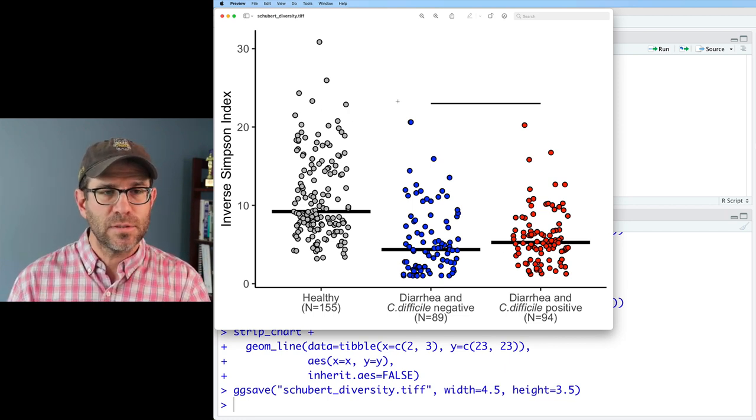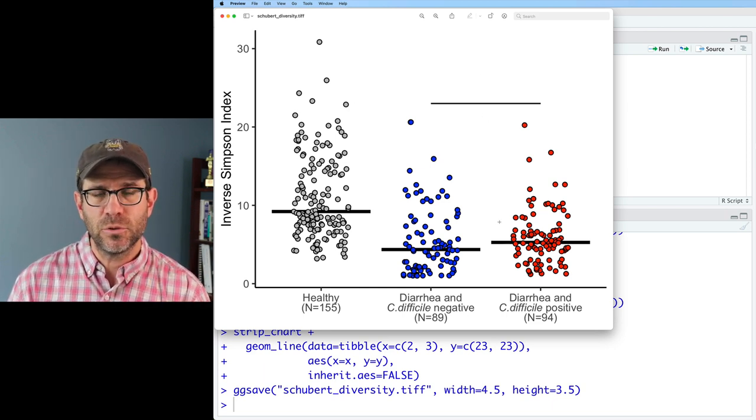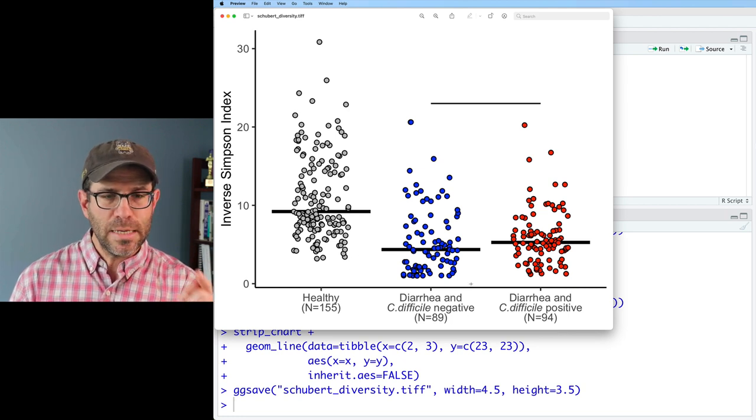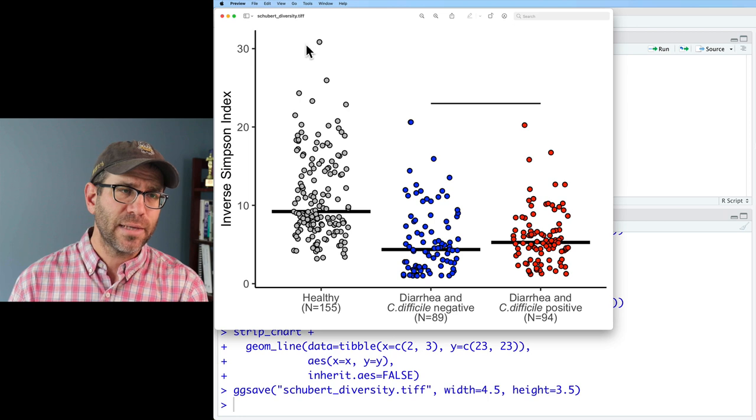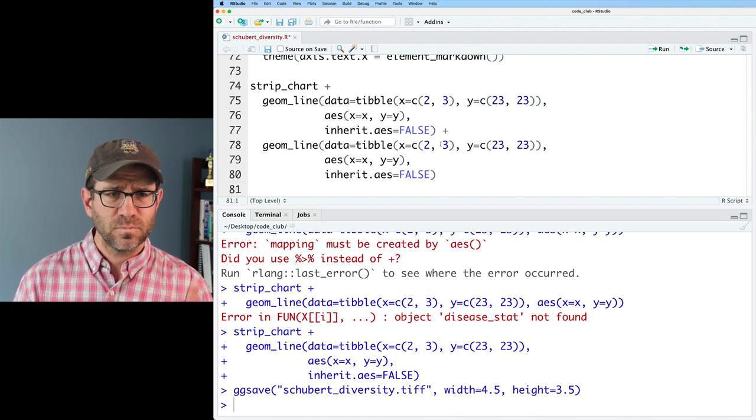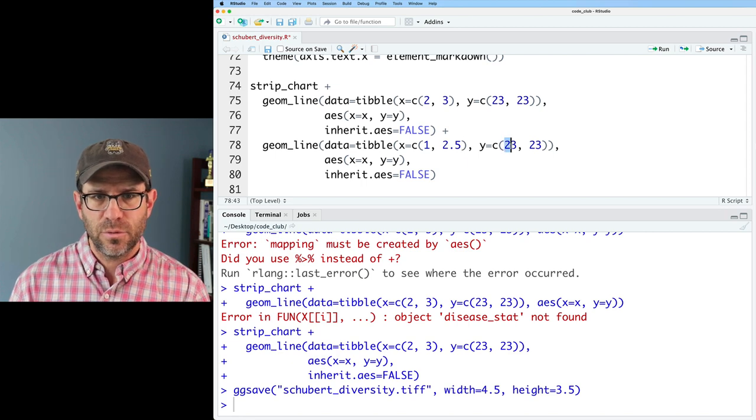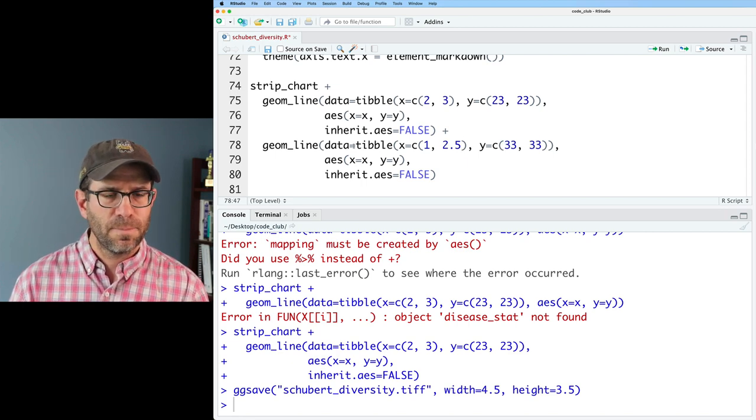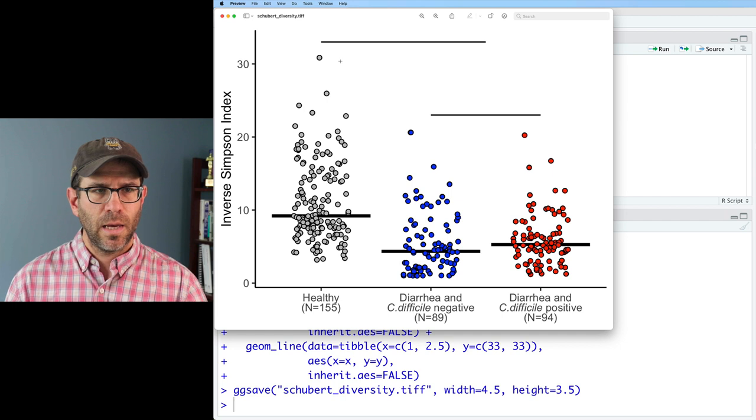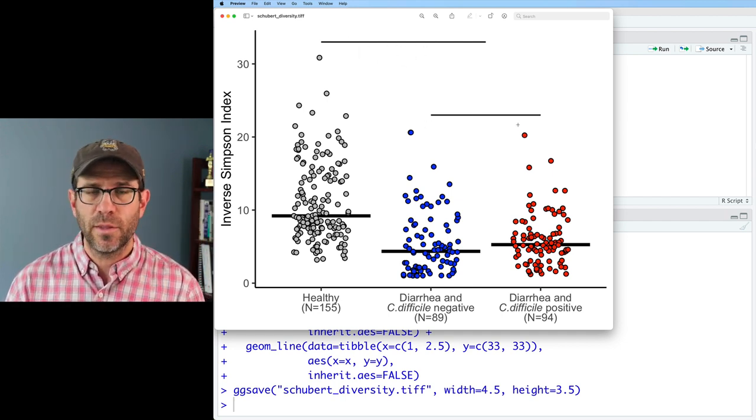Let's repeat this now, creating a line over the top of our healthy and lining up with the middle here between the two diarrhea groups. So we'll do 1 and then 2.5 on the x-axis. And then the y-axis, we'll do maybe like 33, and we'll see how that looks. So again, I'm going to copy this down and put a plus there. So I said 1 and 2.5, and let's do 33 there. And we'll give this another run. We again see that we now have our horizontal bar up here at 33, as well as the one at 23.